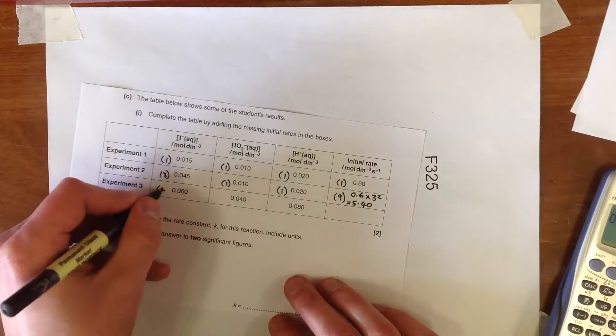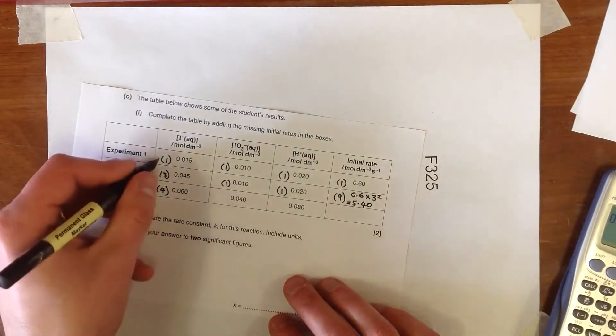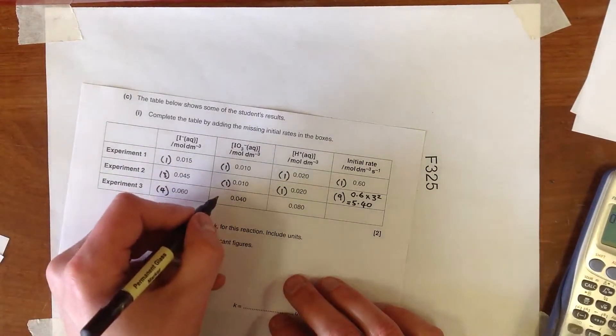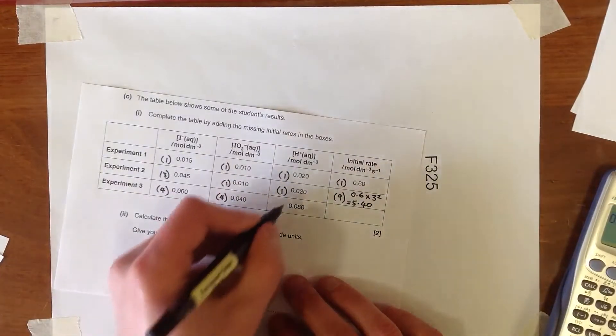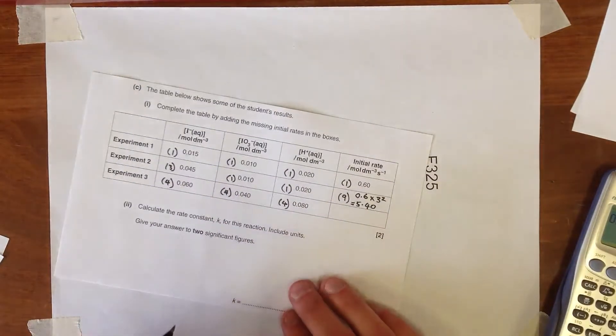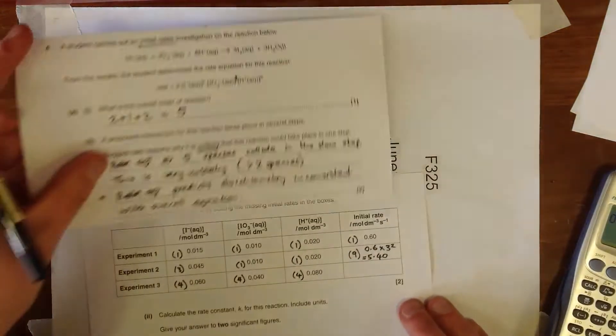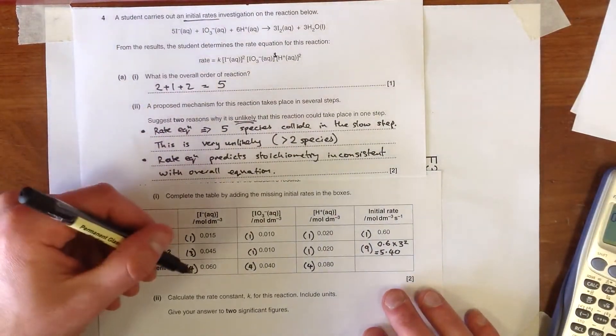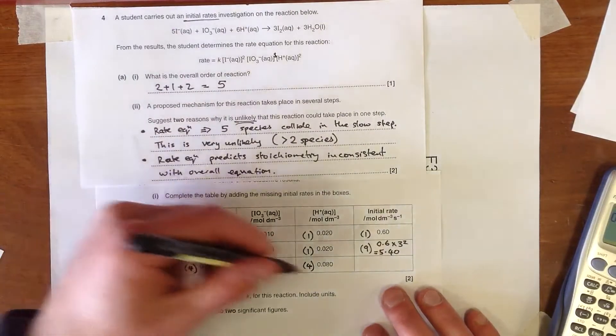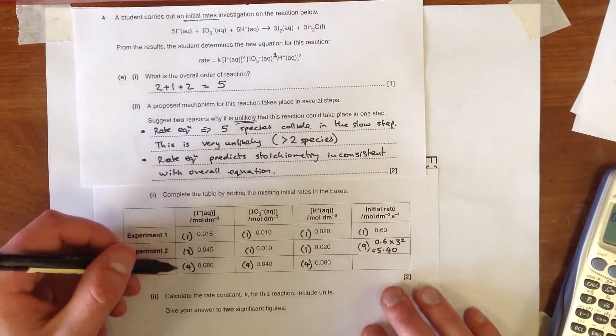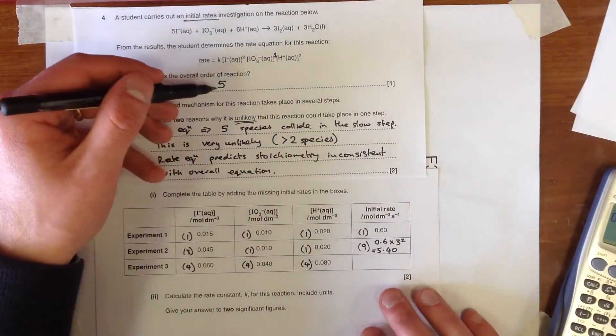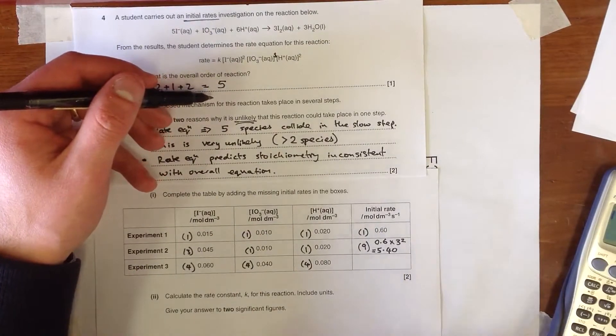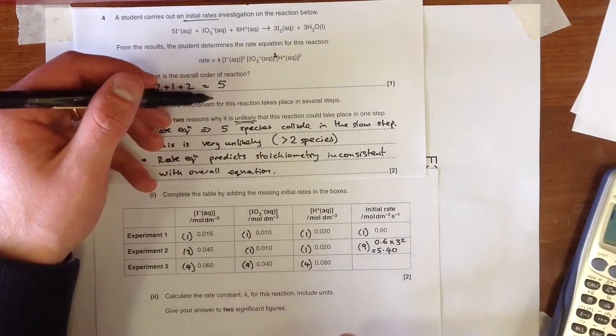Now in this next one here, we've gone four times as much as the first row for iodide, four times as much there, and again four times as much in this case. So we need to look at this reaction. We've got an overall, everything's been quadrupled, and so we can either think about that in terms of, well, it's a fifth order reaction, so we need to increase everything by four to the power of five,